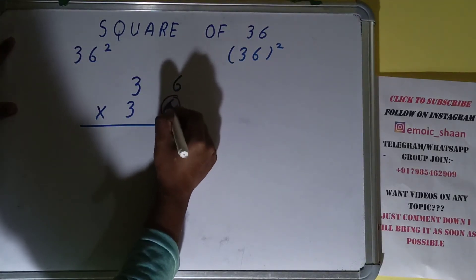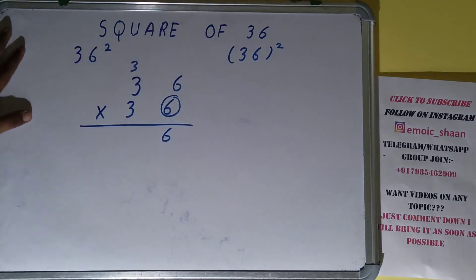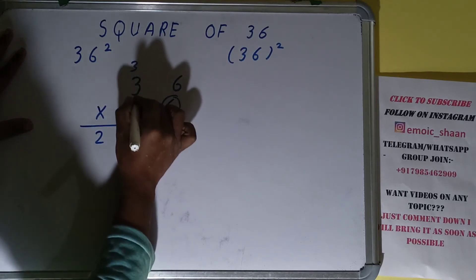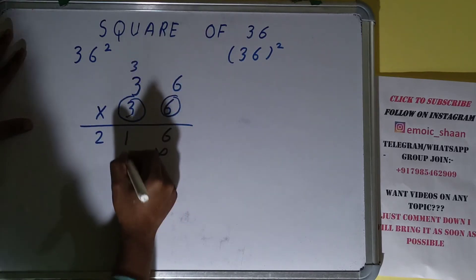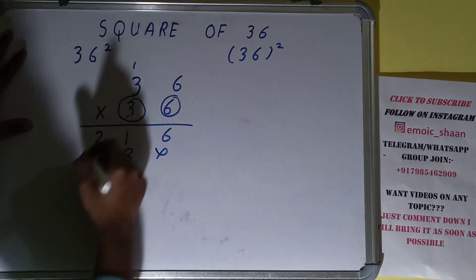We need to start with 6 times 6 equals 36, 6 down, 3 here. 6 times 3 is 18 plus 3, 21. Now with this 3, 6 times 3 is 18, 8 down, 1 carry. It is 9 plus 1, 10.